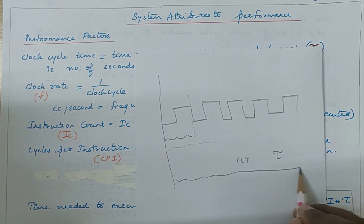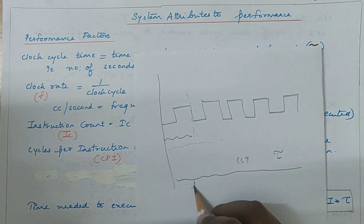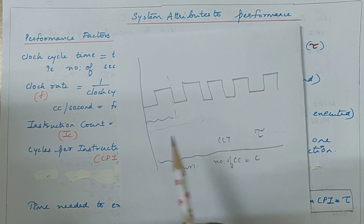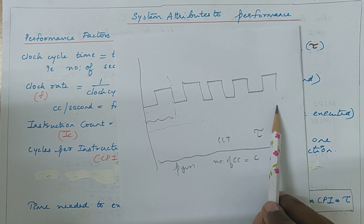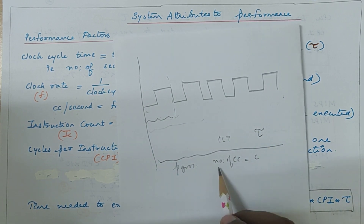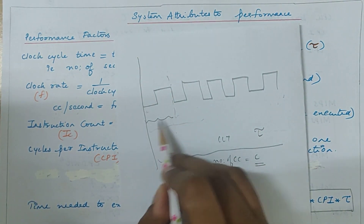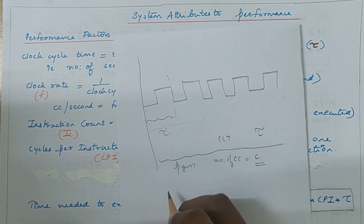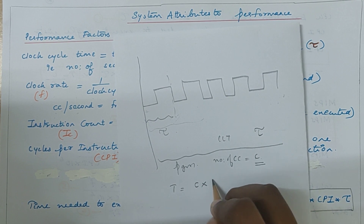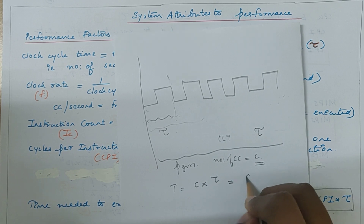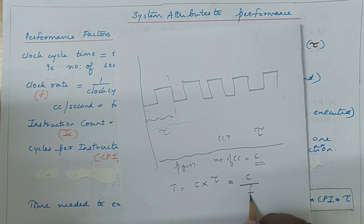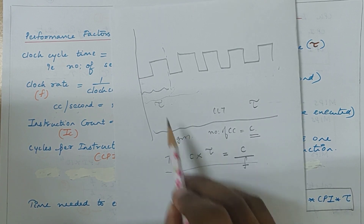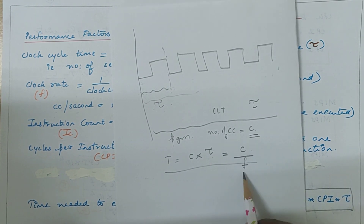In order to find out the time taken by the processor to execute a program, assume C is the total number of clock cycles. We also know the time taken by a single clock cycle is tau. So the total execution time is the number of clock cycles multiplied by tau, or equivalently the number of clock cycles divided by the clock rate f. This is the basic formula for execution time.